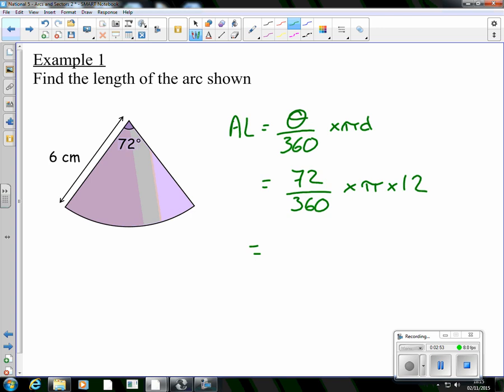The unrounded answer is 7.53982 and so on. Let's do it to three sig figs: one, two, three. Looking at the next one, we'll round us up, so we're at 7.54. Because this is just a length, the length of the arc, we're talking about basic centimeters.